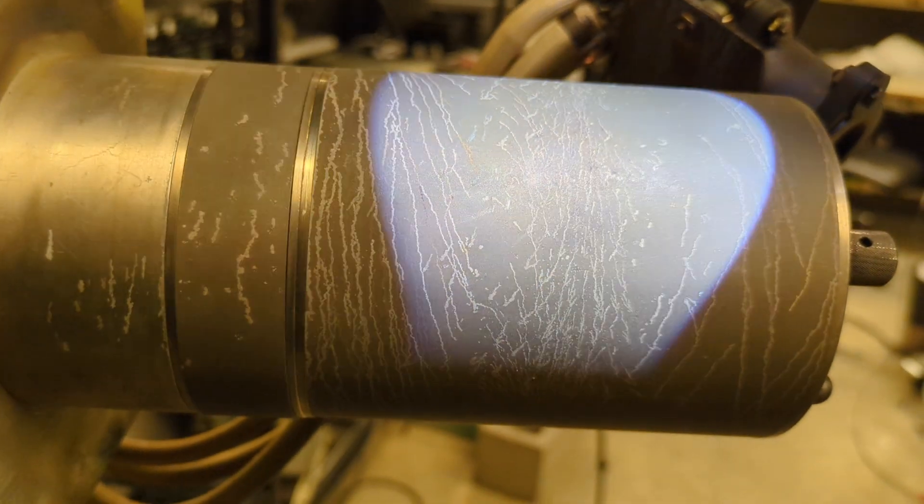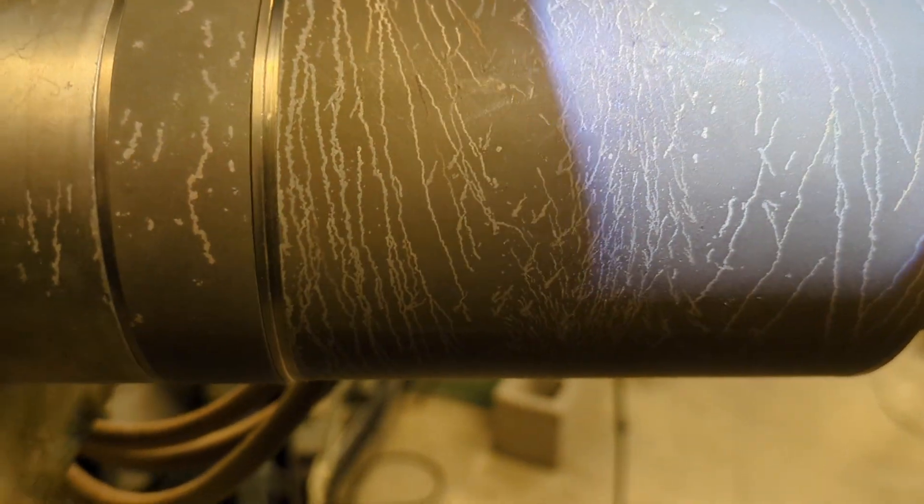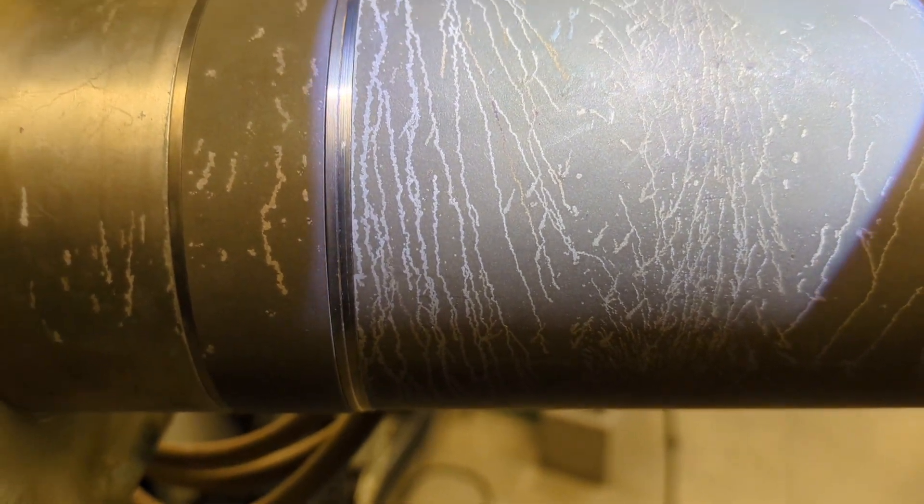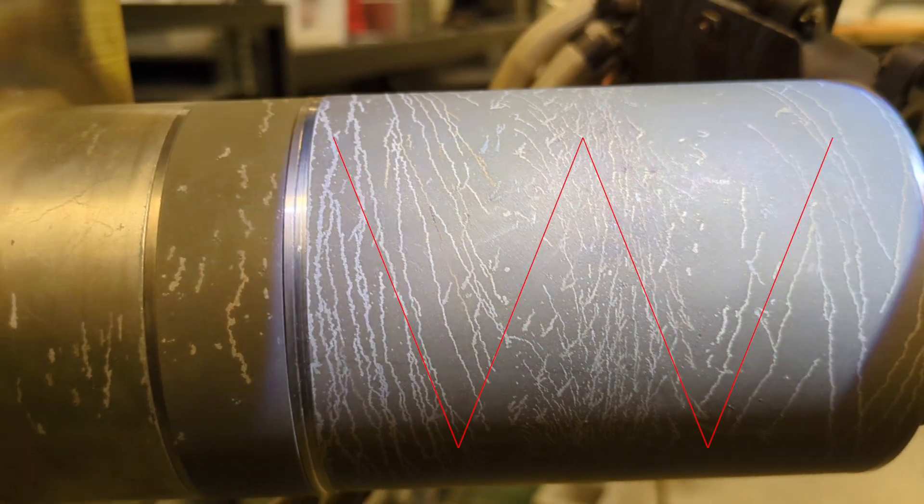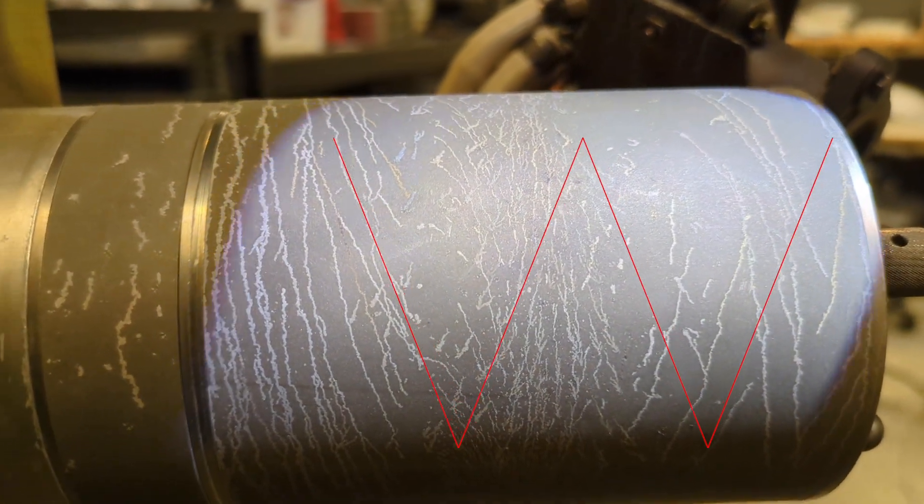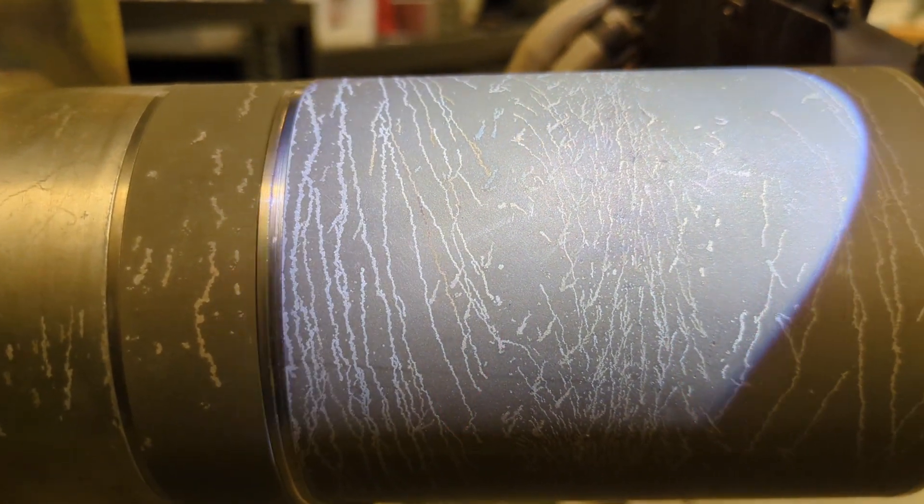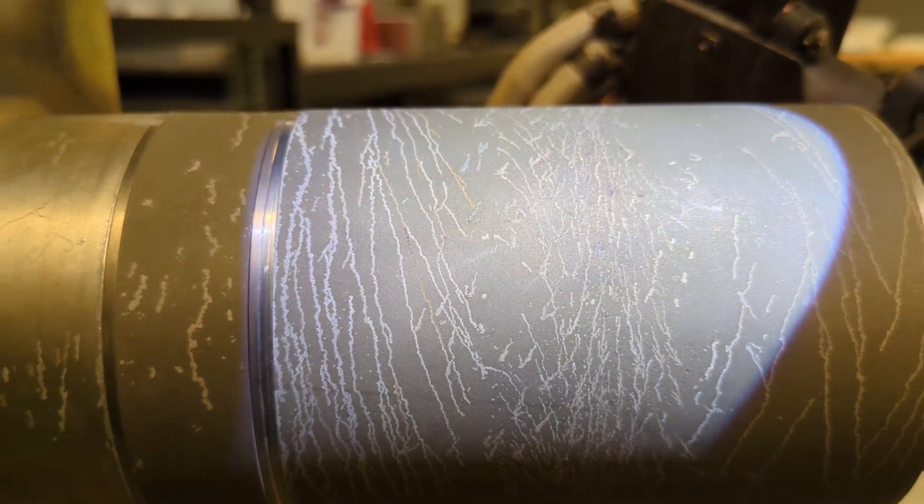You can see we have these sort of termite trail looking things on the side of the thruster. These are actually not meant to be there. This is when the thruster is not operating correctly. It will strike electrical arcs to the casing of the thruster, and they'll dance around and dig these little trails. I think they're in that sort of W shape there because there's magnets underneath there, and those magnets will push the arc around as it's moving around on the thruster.